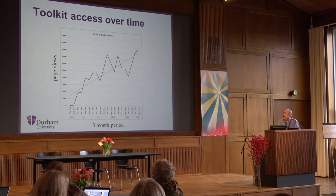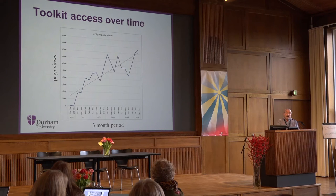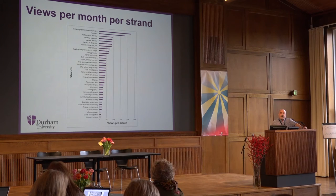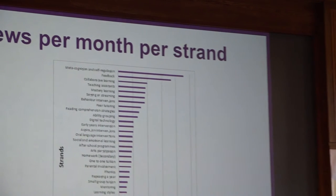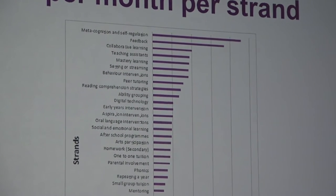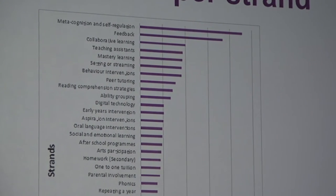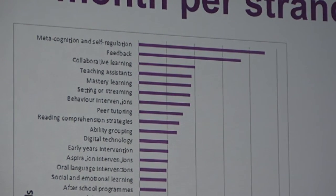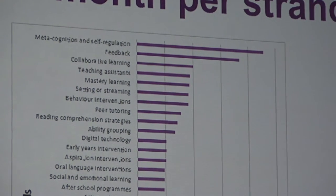Our usage data comes from Google Analytics but also online reports from schools — schools have to report how they spend the pupil premium on their website, so that's a dream for me as a researcher because I can just Google school websites and find out how they're spending their pupil premium. We've got quite high take-up — 800,000 views. Access over time has increased: over a three-month period our hit rate is now about 40,000 unique page views, built up from a base in 2011. There's a dip where we moved to a new website during a redesign. There's also big variation in which strands teachers or schools look at — what explains the ones at the top is partly that they're the highest value in terms of months of progress.